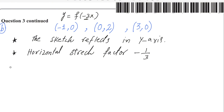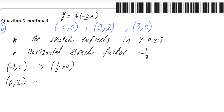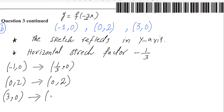Find the transformed points by multiplying the x component by (-1/3). The first point (-1, 0): (-1) × (-1/3) = 1/3, so the new point is (1/3, 0). The second point (0, 2): 0 × (-1/3) = 0, so it remains (0, 2). The third point (3, 0): 3 × (-1/3) = -1, giving (-1, 0). These are the transformed points.